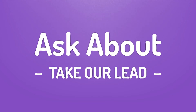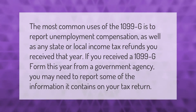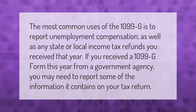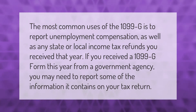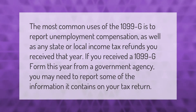The most common uses of the 1099-G is to report unemployment compensation as well as any state or local income tax refunds you received that year. If you received a 1099-G form this year from a government agency, you may need to report some of the information it contains on your tax return.